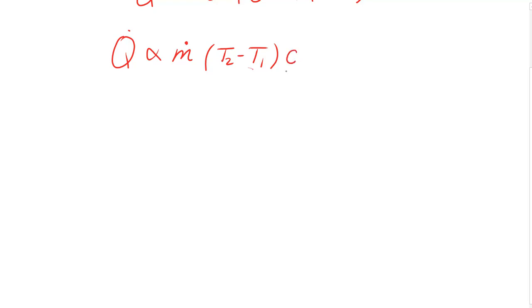It also depends on the fluid that you are heating or cooling. So we factor for that with a specific heat parameter, which we normally denote as C. And for those of you who are a little more advanced, because this is an open system, the specific heat at constant pressure, or CP, is the correct specific heat to use. But we'll just denote it as C here.